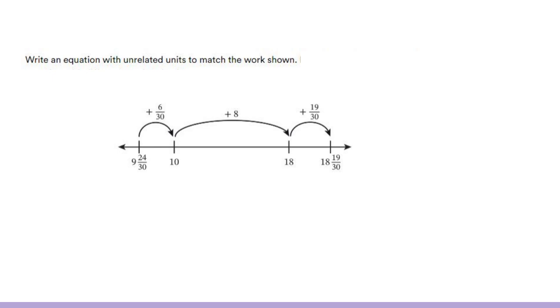The second station in this gallery walk says write an equation with unrelated units to match the work shown. We know that we have two addends. The first one is easy to see. We know we have 9 and 24 thirtieths. Now, the jumps on the number line are going to show my other addend. So, all of these terms are going to show what I'm adding together. So, it's going to be 8 and then if I add 6 thirtieths and 19 thirtieths, that would be 25 thirtieths.